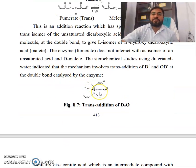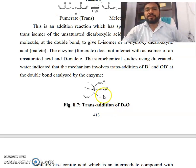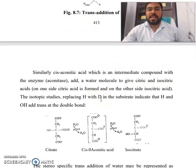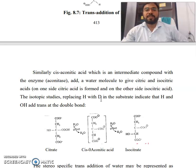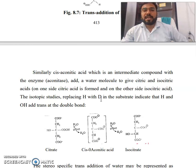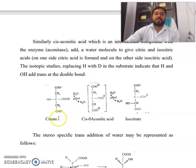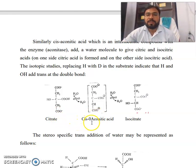Similarly, cis-aconitic acid, which is an intermediate compound, reacts with the enzyme aconitase, which adds a water molecule to give either citric acid or isocitric acid. Isotopic studies replacing hydrogen with deuterium in the substrate indicate that hydrogen and OH add trans at the double bond, giving citrate, cis-aconitic acid, and isocitrate.